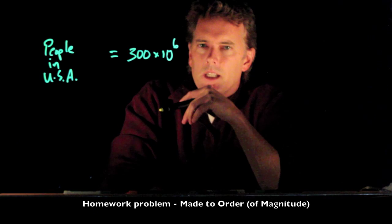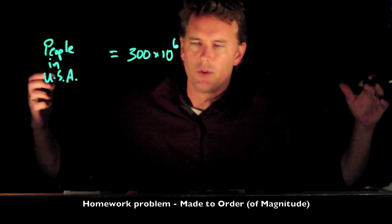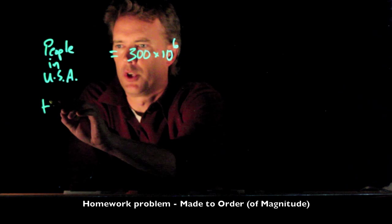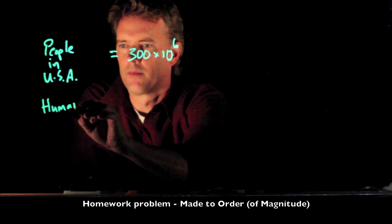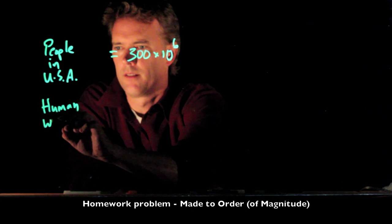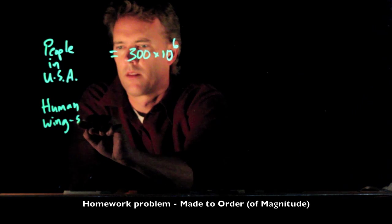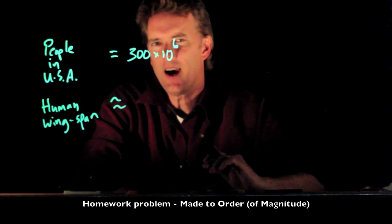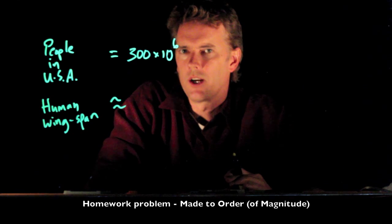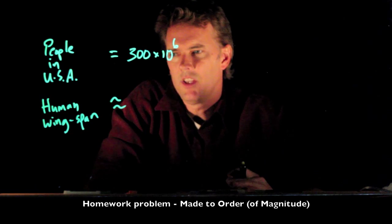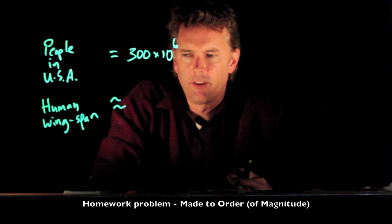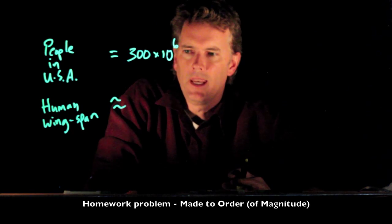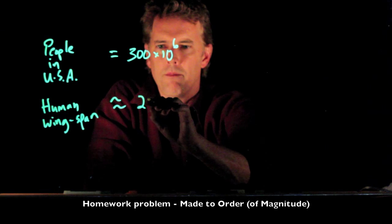How big is the wingspan of a typical human, right hand-to-hand? Well, it's about the same as your height, and the average height is probably five to six feet.